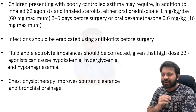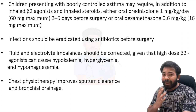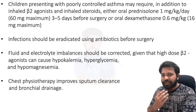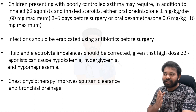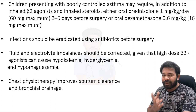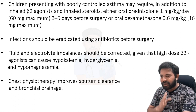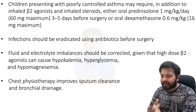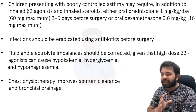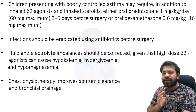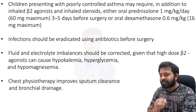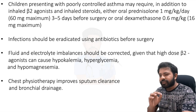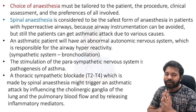Infections should be eradicated with antibiotics before surgery. Fluid and electrolyte imbalances should be corrected — drugs like salbutamol (beta-2 agonists) can cause hypokalemia, so monitor for hypokalemia, hyperglycemia, and hypomagnesemia, especially in patients on chronic high-dose beta-2 agonists. Chest physiotherapy has proven benefit for sputum clearance and bronchial drainage.